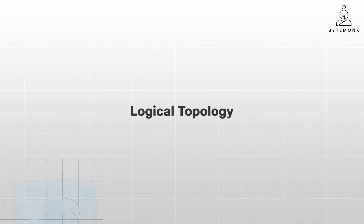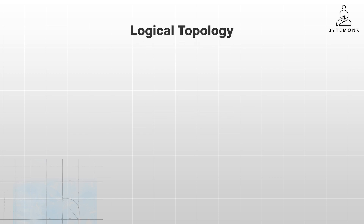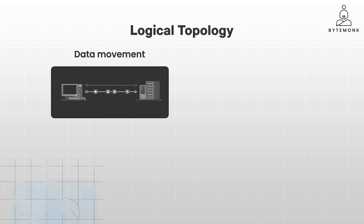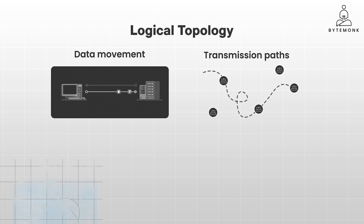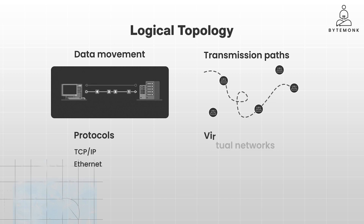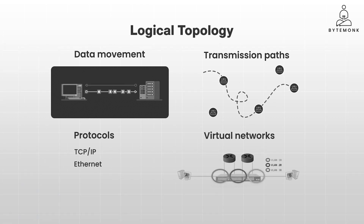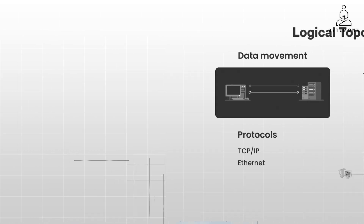Logical topology, on the other hand, focuses on how data flows within a network, regardless of its physical structure. It is concerned with how data packets travel from one device to another, the routes data takes through the network, the rules governing data transmission such as TCP, IP, and Ethernet, and the logical subdivisions within a physical network, often created using VLANs or virtual local area networks.